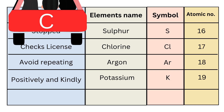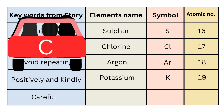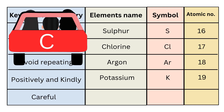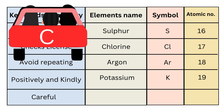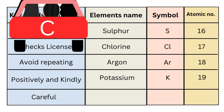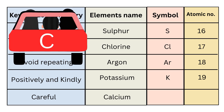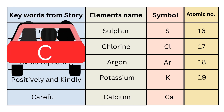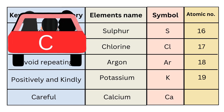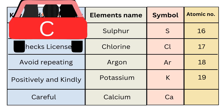Finally, they became careful while driving after that incident. So your last key word to remember is 'careful'. From that you can remember your twentieth element name, that is Calcium. Symbol is Ca, and atomic number is 20.